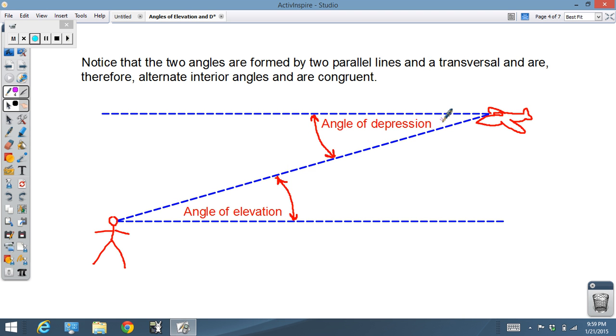Now, one thing we ought to know is that you're looking up at this guy, he's looking down at you. We've got two parallel lines, horizontal lines cut by a transversal. And that means these two angles are congruent. The angle of elevation and the angle of depression in this case are both the same angle or same measurement.